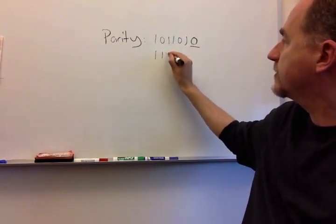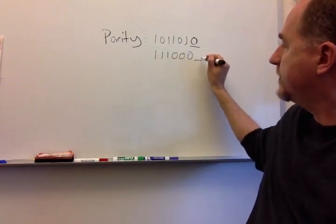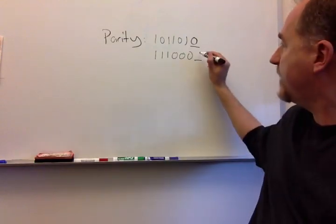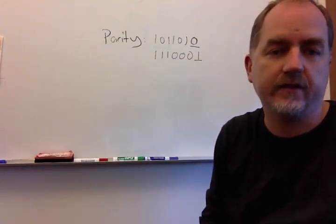If the number of ones were not even to begin with, in this case there are three ones, then the parity bit we add is going to be a one to make the number of ones be even, in this case four.